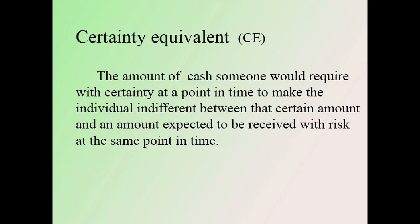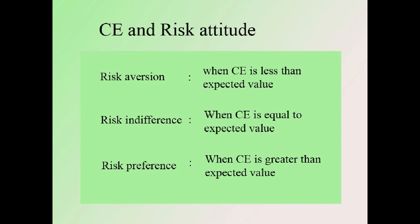Now let's see the certainty equivalent (CE) concept. CE is the amount of cash an investor would have to receive to be indifferent between the payoff and a given risk — it answers: what is the smallest certain payoff an investor would accept in exchange for a risky cash flow? If CE is less than the expected value, it is called risk aversion; if CE equals expected value, it is risk indifference; if CE is greater than expected value, it is called risk preference.